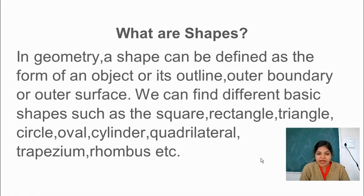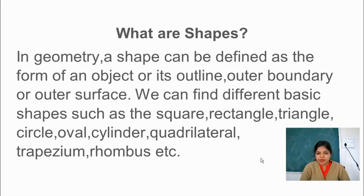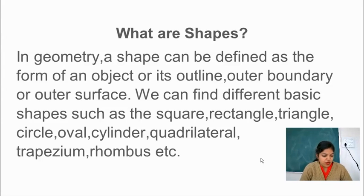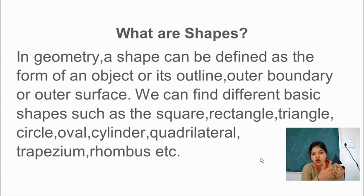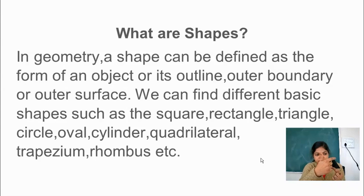First of all I will tell you what are shapes. In geometry, a shape can be defined as the form of an object or its outline, outer boundary or outer surface. For example, I have this triangle. You can see what is the shape. Shape is its outline — its outline is called the shape, its outer boundary.